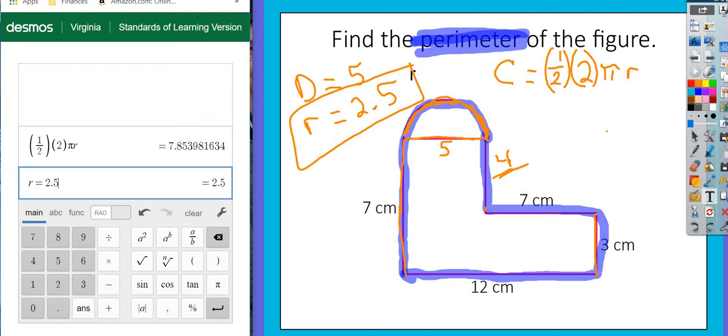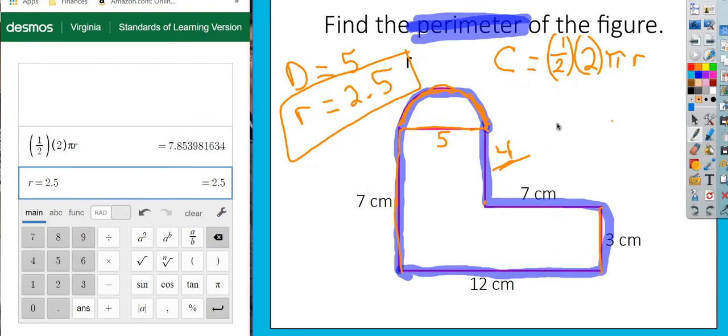So that gives me the circumference of the semicircle. Oh, I'm sorry. I messed up my stylus. That gives me the circumference of that semicircle to be 7.9.